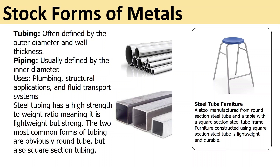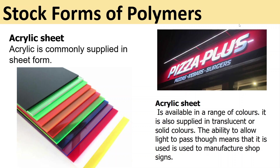Steel tubing or aluminium tubing is often defined by outer diameter and wall thickness, whereas piping is usually defined by inner diameter for plumbing applications. Steel tubing has a high strength-to-weight ratio, meaning it is lightweight but strong. The two most common forms are round steel tubes and square section steel tubes. You can see steel tube used in furniture — it is durable, low cost, and lightweight.